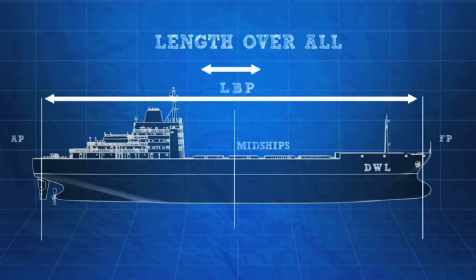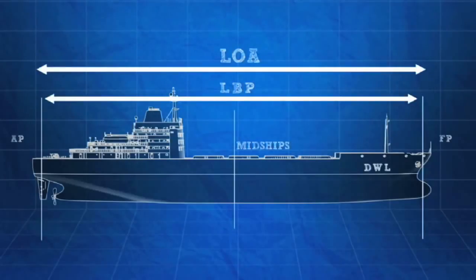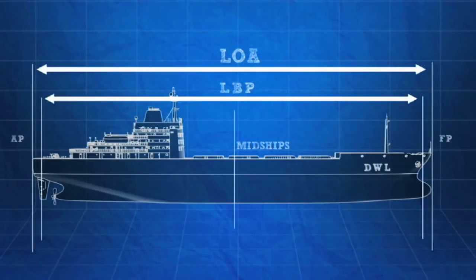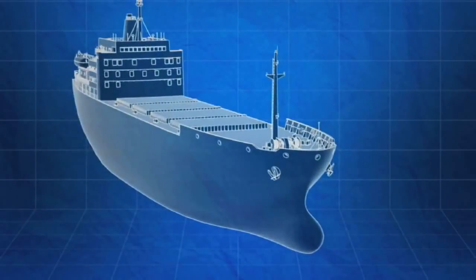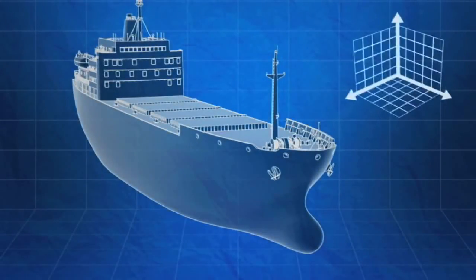Length overall, or LOA, is the total length of a ship at its longest point. Note that this may be a little longer than the LBP because a ship can extend slightly past the perpendiculars. Distances onboard ships are measured in one of three directions: longitudinally, transversely, and vertically.